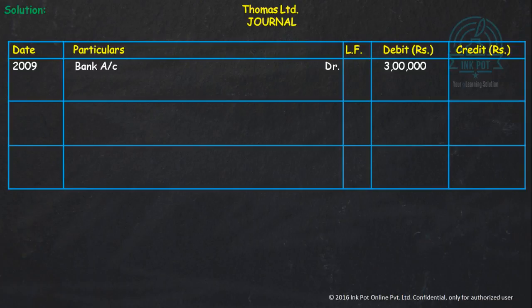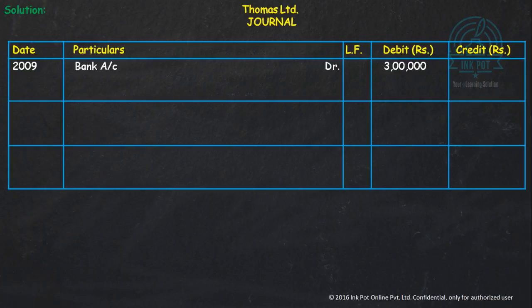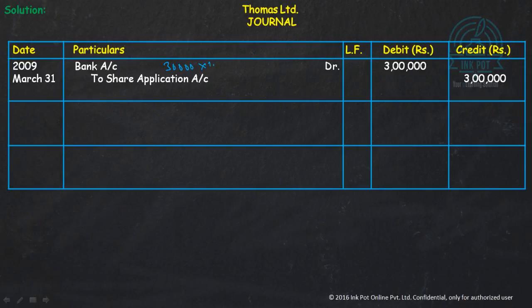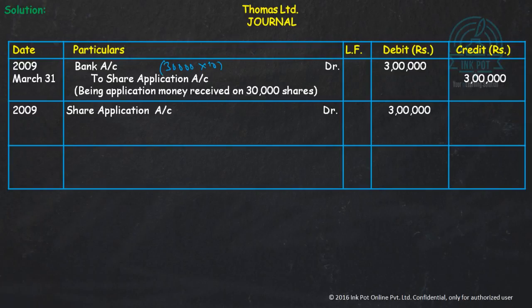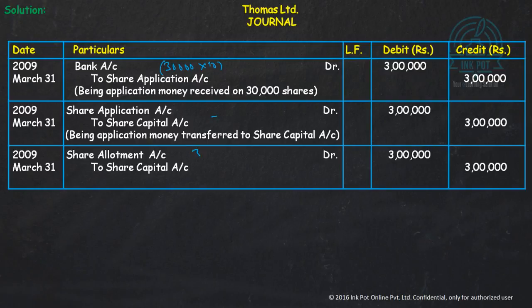First, we will see the normal journal entries. Bank account debit to share application — there are 30,000 shares and application was Rs. 10 per share, so the amount received is 30,000 shares × Rs. 10 each. This amount is also transferred to share capital. Similarly, share allotment is due: 30,000 shares × Rs. 10 each.